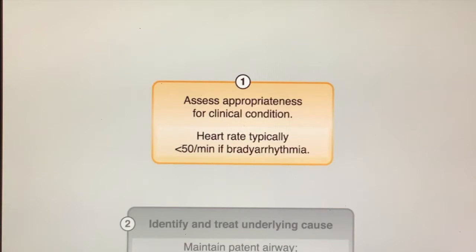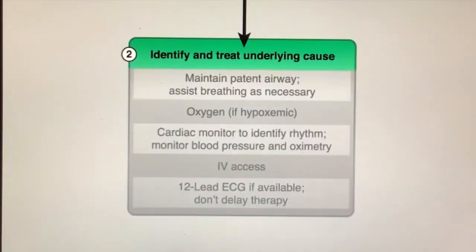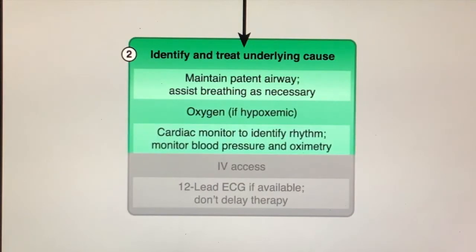Once bradycardia has been identified, first steps include the components of the BLS assessment and primary assessment, such as supporting circulation and airway management, giving oxygen, monitoring the rhythm and vital signs, establishing IV access, and obtaining a 12-lead ECG if available.